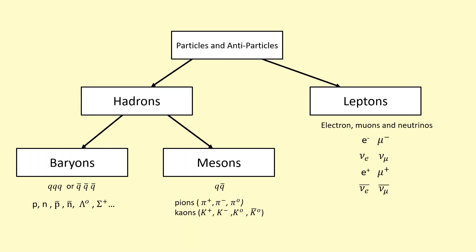We've been looking at the different types of particles: we've got baryons, and antiprotons as well, and then we've got mesons which are pions and kaons, then you've got leptons which are electrons, muons, neutrinos, and their different antiparticles as well.